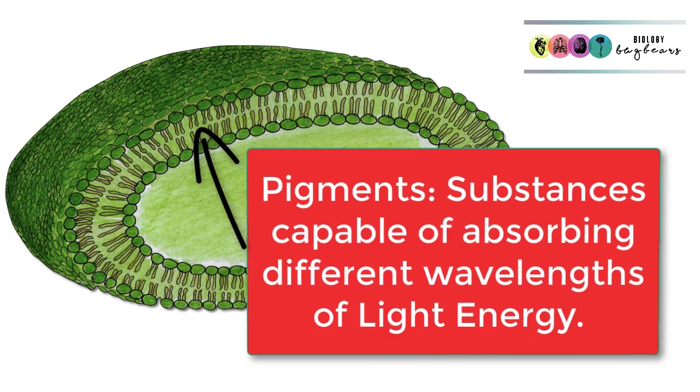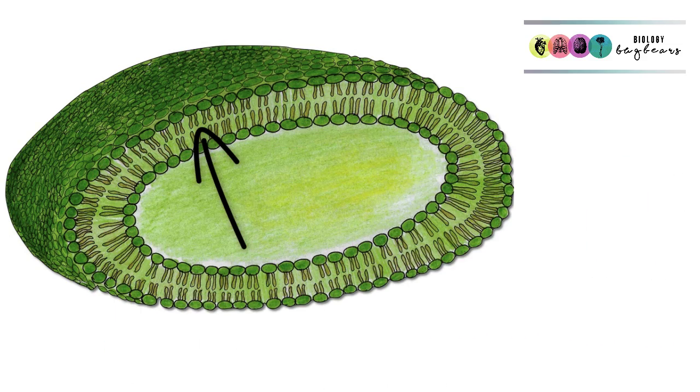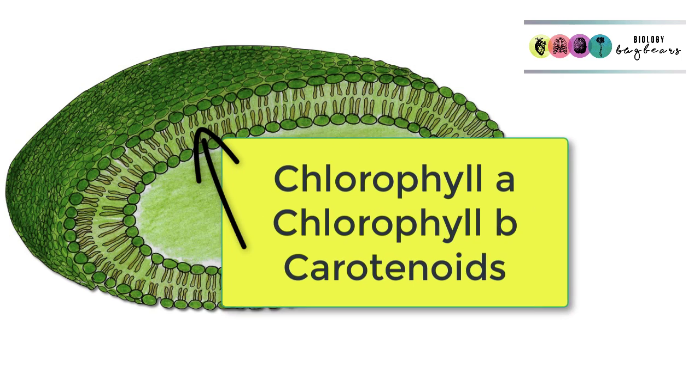Photosynthesis is taking place in the chloroplast. Specifically, we're now looking at the membranes of the thylakoids inside the chloroplasts, where we find these substances known as pigments. These are capable of absorbing different wavelengths of light energy. The most important is chlorophyll.